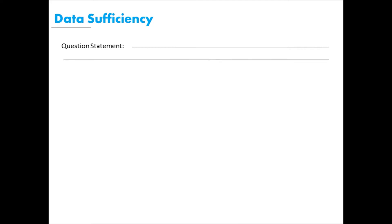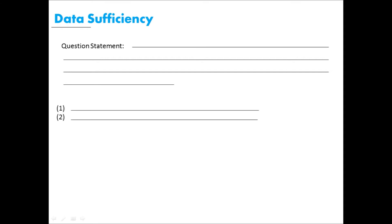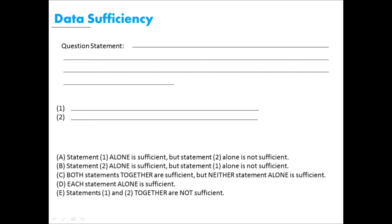Data Sufficiency questions are quite unique to GMAT. You're given a question prompt with insufficient data, followed by two statements carrying data relevant to the question. Your job is to tell whether that data is sufficient. There are five options always in the same order: (A) Statement 1 alone is sufficient but Statement 2 alone is not; (B) Statement 2 alone is sufficient but Statement 1 is not; (C) Both statements together are sufficient but neither alone is; (D) Each statement alone is sufficient; (E) Statements 1 and 2 together are not sufficient.